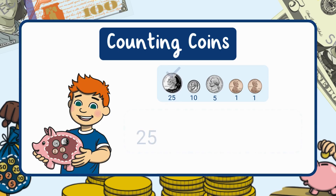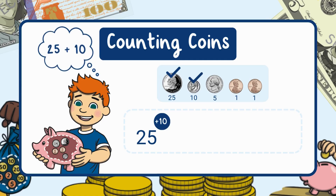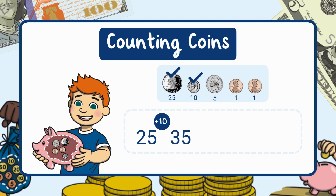Let's count the money from the piggy bank. Start with the quarter — a quarter is worth 25 cents, so we start with 25. Next we have a dime. A dime is worth 10 cents, so let's add: 25 plus 10 equals 35.